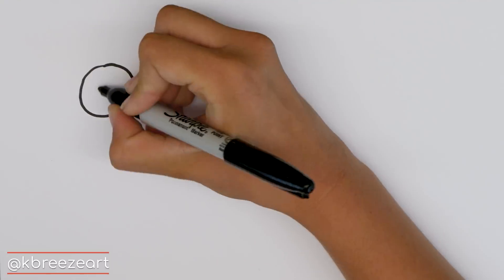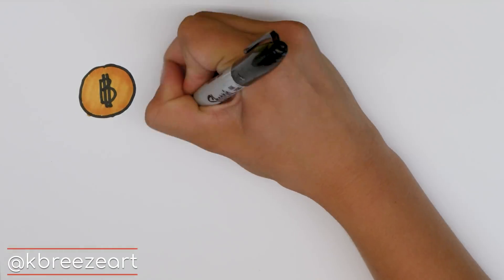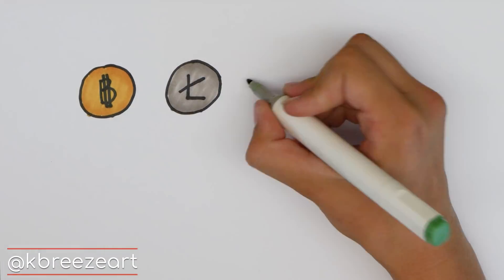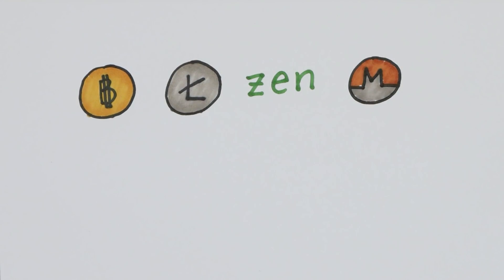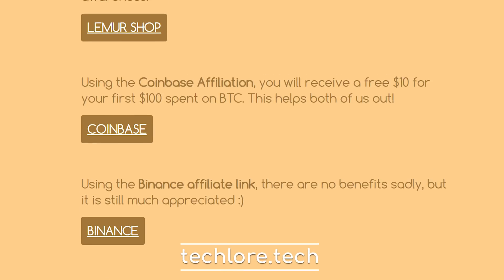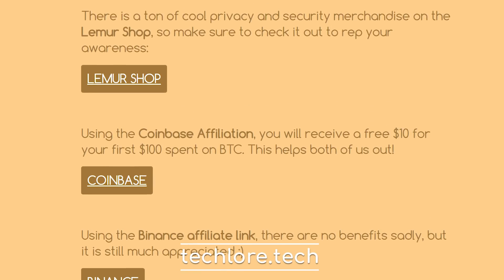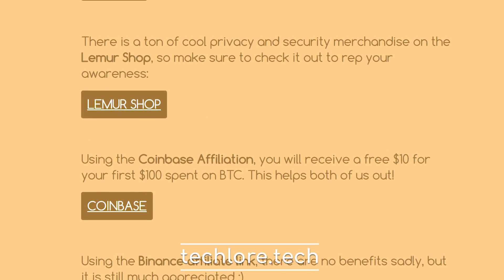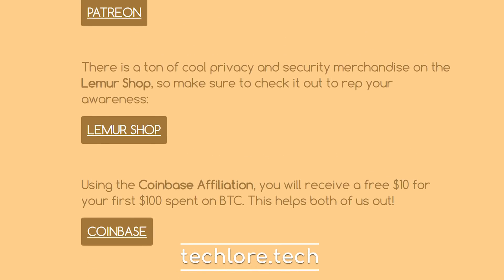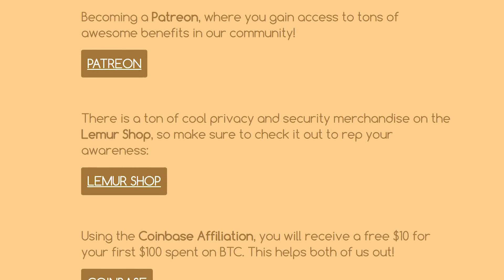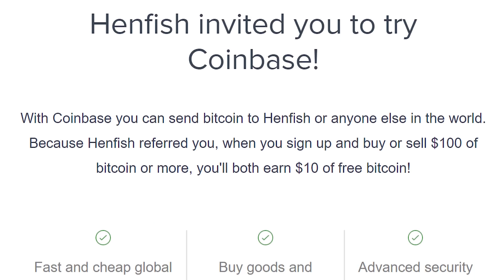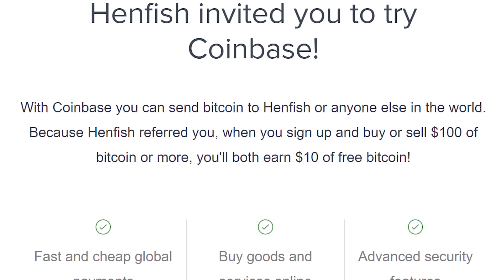But financially, there is Bitcoin, Litecoin, Zencash, and Monero addresses in the support page which you can use to donate directly. If you are planning on creating a Coinbase or Binance account, I have affiliate links for those. And if you buy $100 worth of Bitcoin through Coinbase using the link there, you will get a free additional $10 in Bitcoin, which is free money.